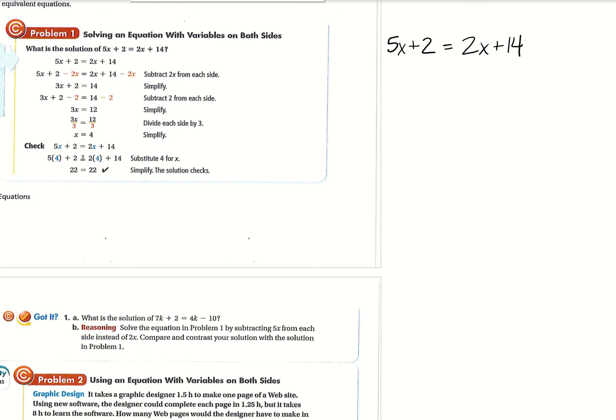All right, so there's a couple ways you can do this one. The first thing that we're going to do is we're just going to subtract 2x first. You could also subtract 2 or 14 first, whichever one you prefer. So that one will cancel out,